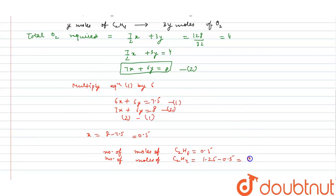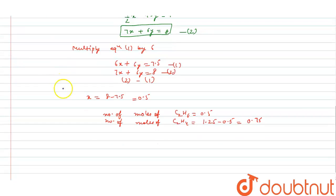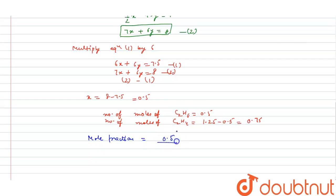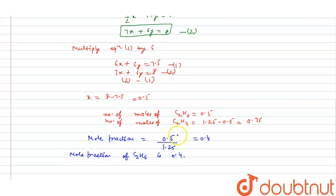From x = 0.5, substituting back gives y = 0.75 moles of C2H4. The mole fraction of C2H6 equals the number of moles of C2H6 divided by the total moles of mixture: 0.5 divided by 1.25 = 0.4. So the mole fraction of C2H6 in the given mixture is 0.4. I hope you understood the solution.